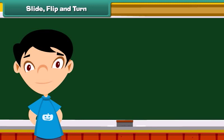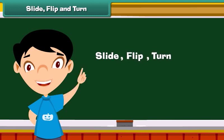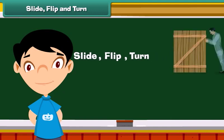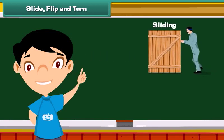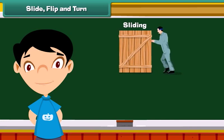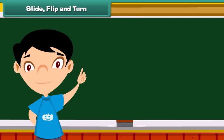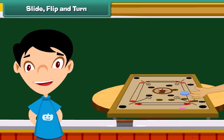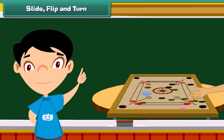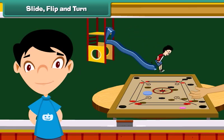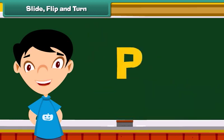You must have come across the words slide, flip, and turn many times in your life. Let us see what they mean in mathematics. Moving an object smoothly along a surface without disturbing its shape and size is called sliding. We observe sliding in real life while playing carrom — we move the carrom coins by hitting them with a striker. Children also enjoy themselves on slides.